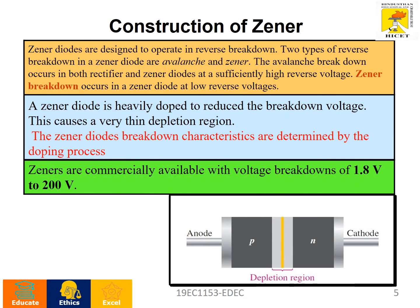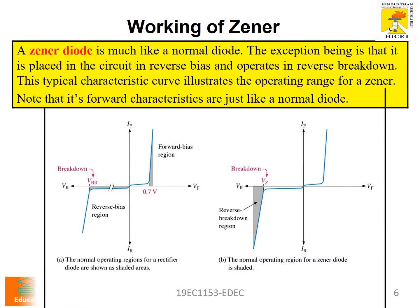Regarding construction, it is similar to that of a p-n junction diode. A zener diode is heavily doped to reduce the breakdown voltage. Because of this heavy doping, it produces a very thin depletion region, and its voltage rating is about 1.8 volts to 200 volts.